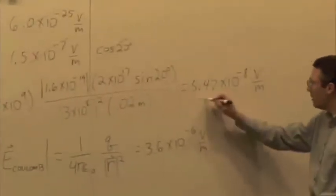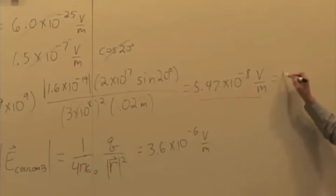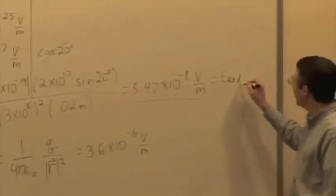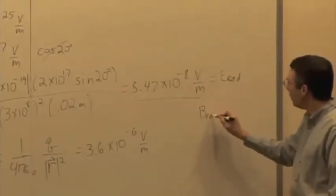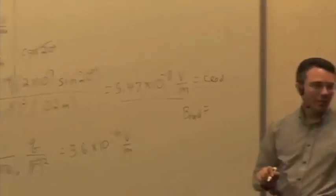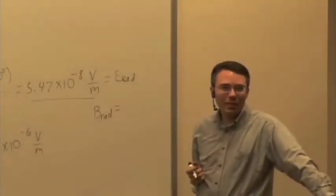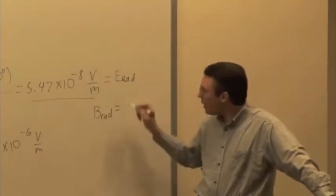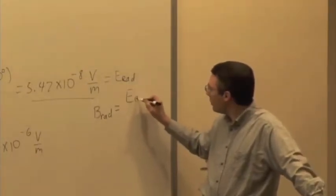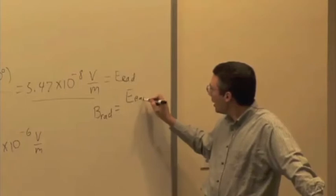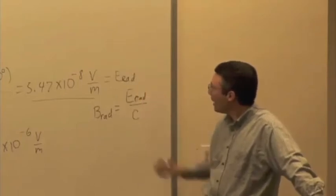If we know this is the magnitude of the radiative electric field, how do I get B radiative? What was the relationship? Over C, right? B_rad is equal to E_radiative divided by the speed of light.